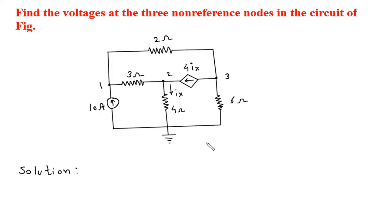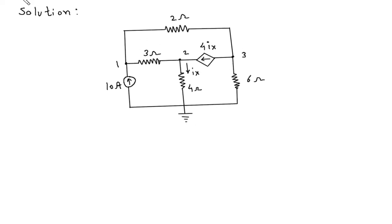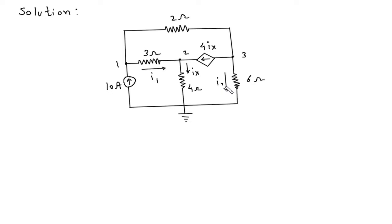For the solution, we will first redraw the circuit. Let us assume the direction of current in this direction. All the currents are towards this reference node. Let's say this is I1, this is I2, and this is I3.